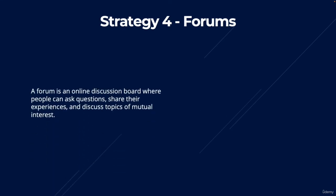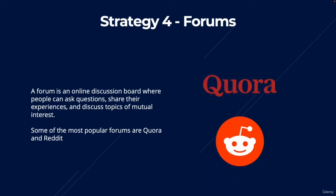Strategy number four is forums — online discussion boards where people can ask questions, share experiences, and discuss topics of mutual interest. You can use targeted forums to generate affiliate marketing sales by finding forums related to the products or services you want to promote. Some of the most popular forums are Quora and Reddit, though there are many more when you niche down to a specific topic.